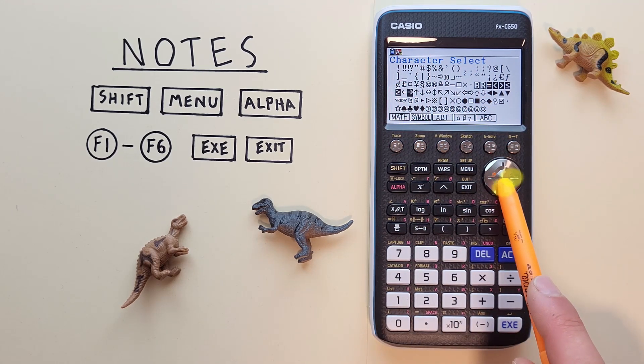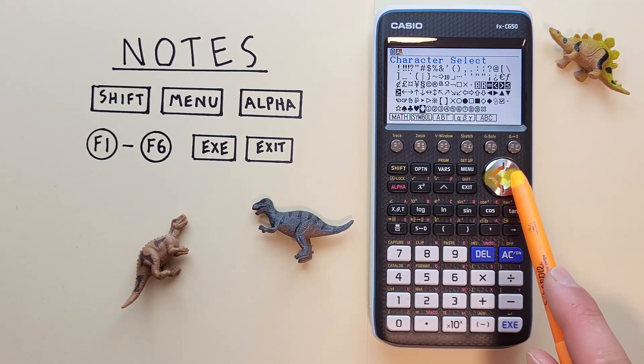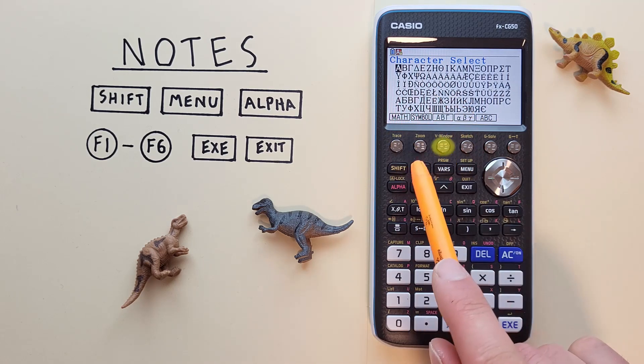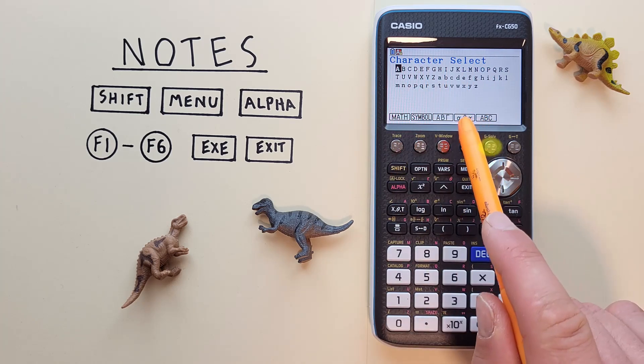Even our spades, clubs, hearts and diamonds for cards. We got our Greek letters in uppercase, our lowercase Greek letters, and our normal letters as well.